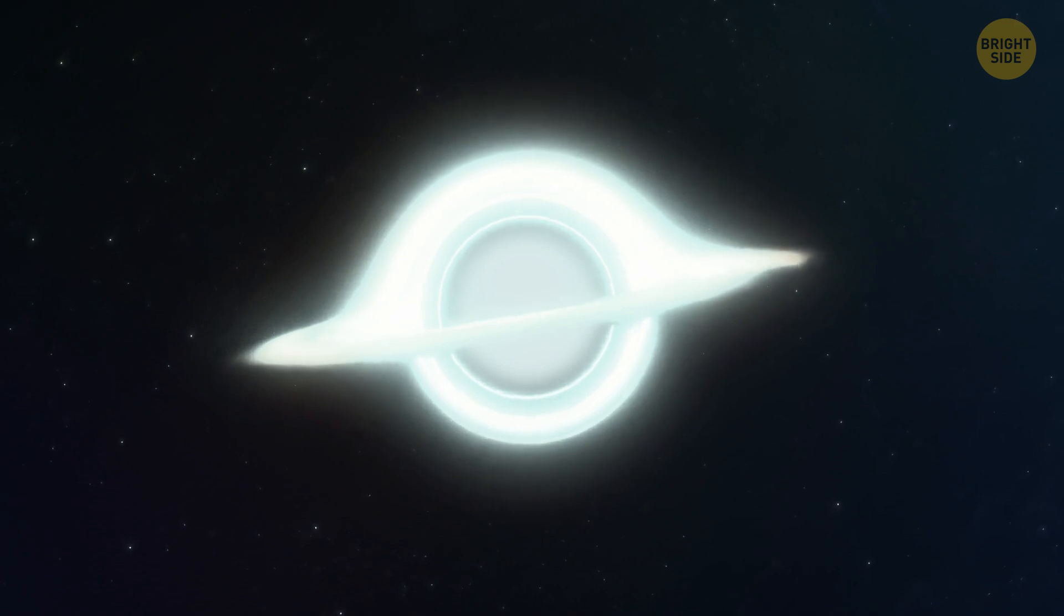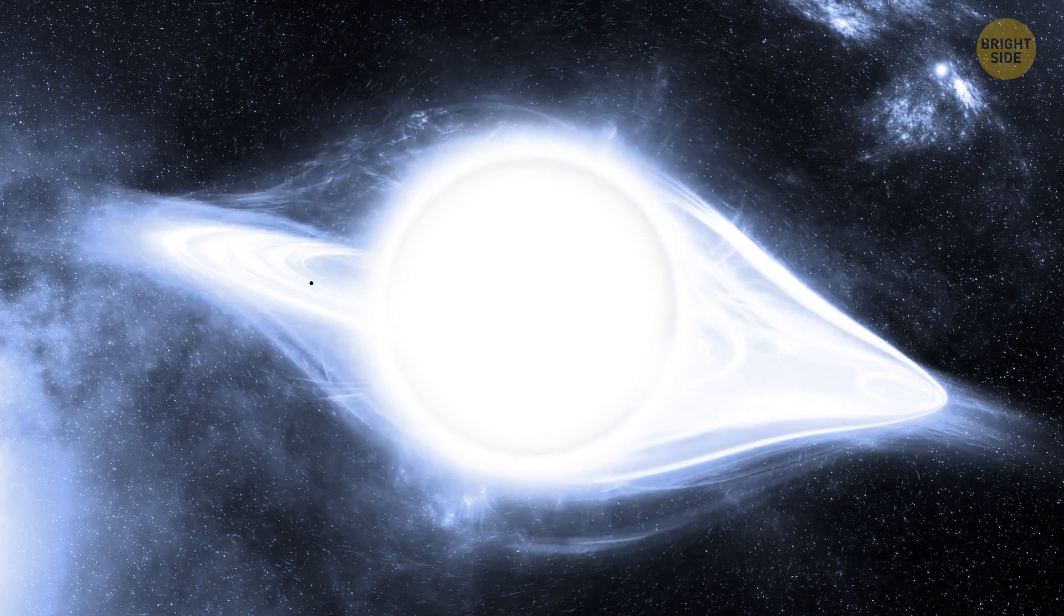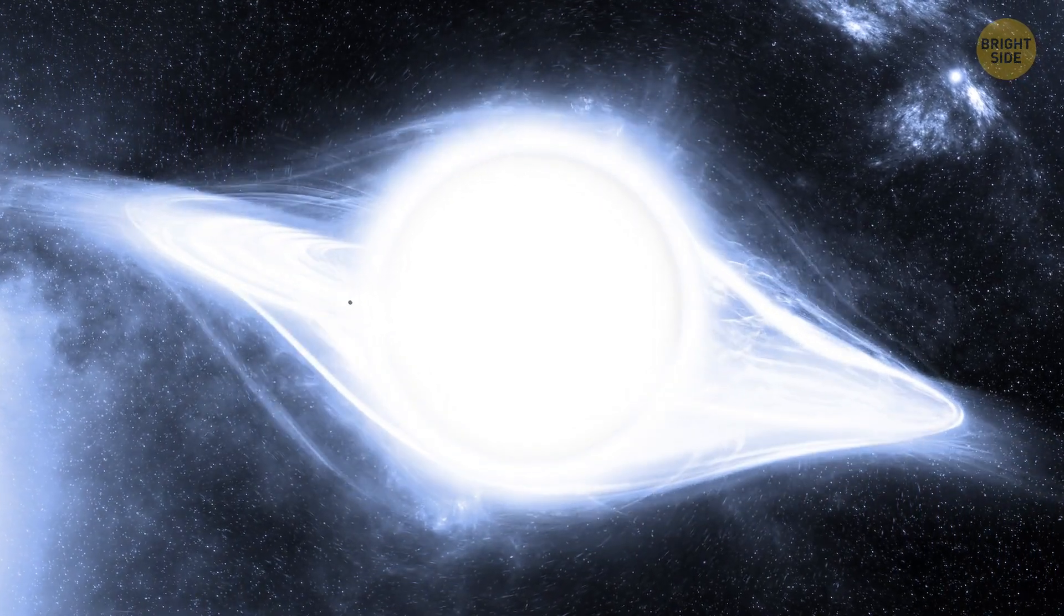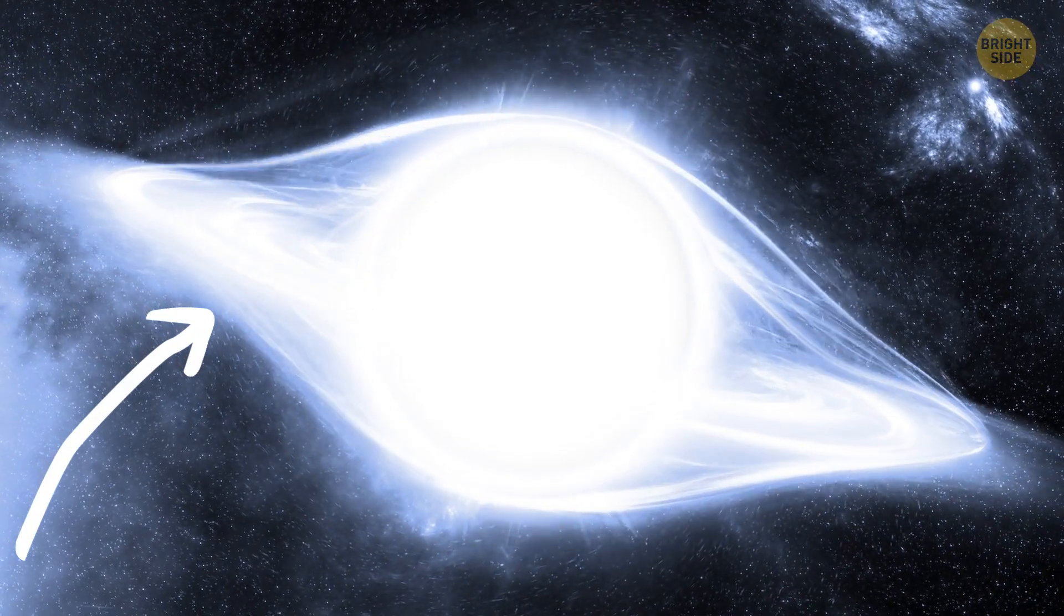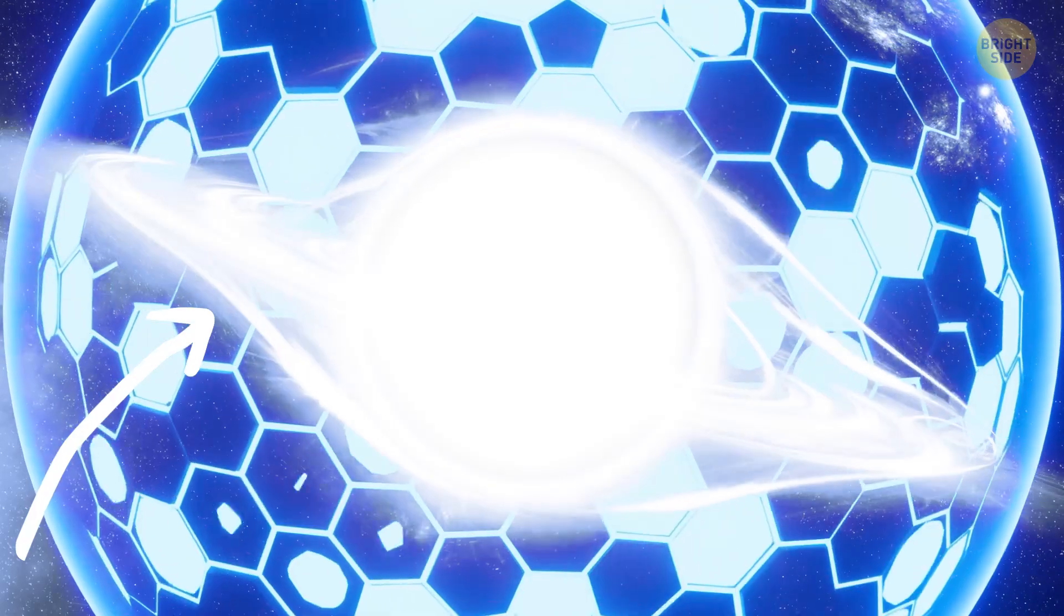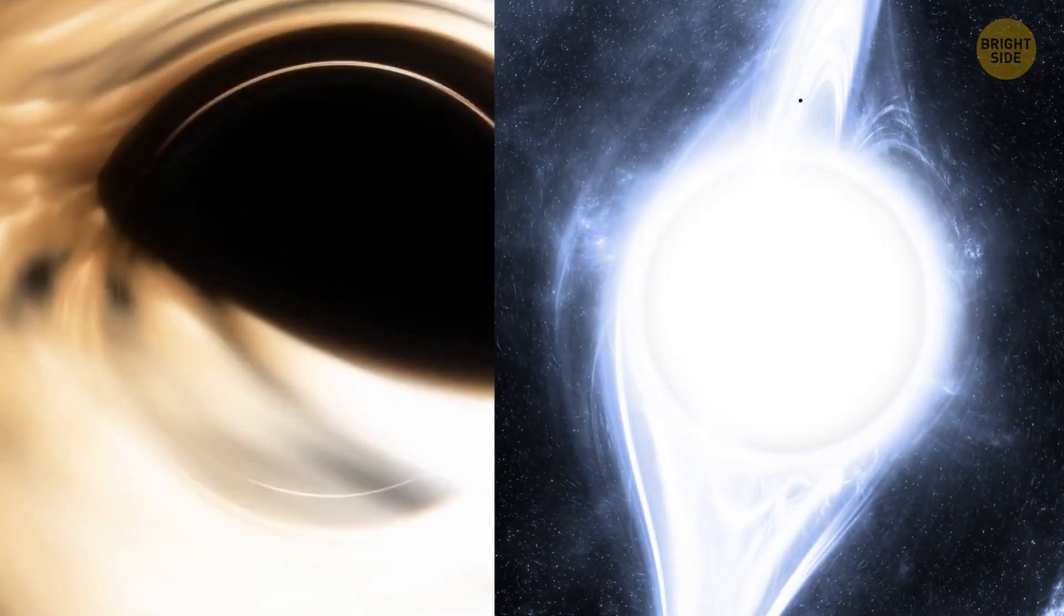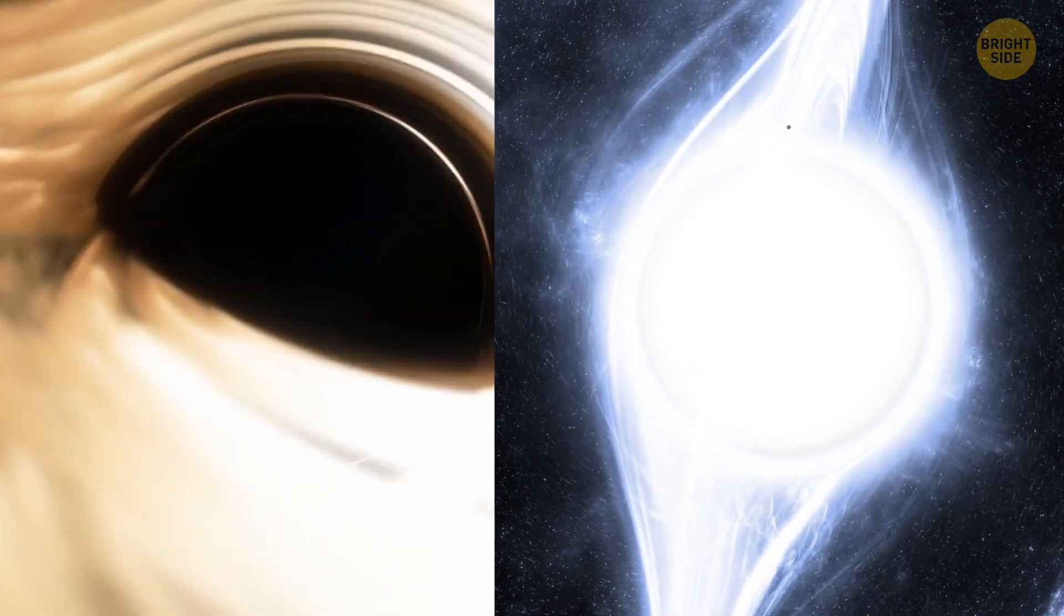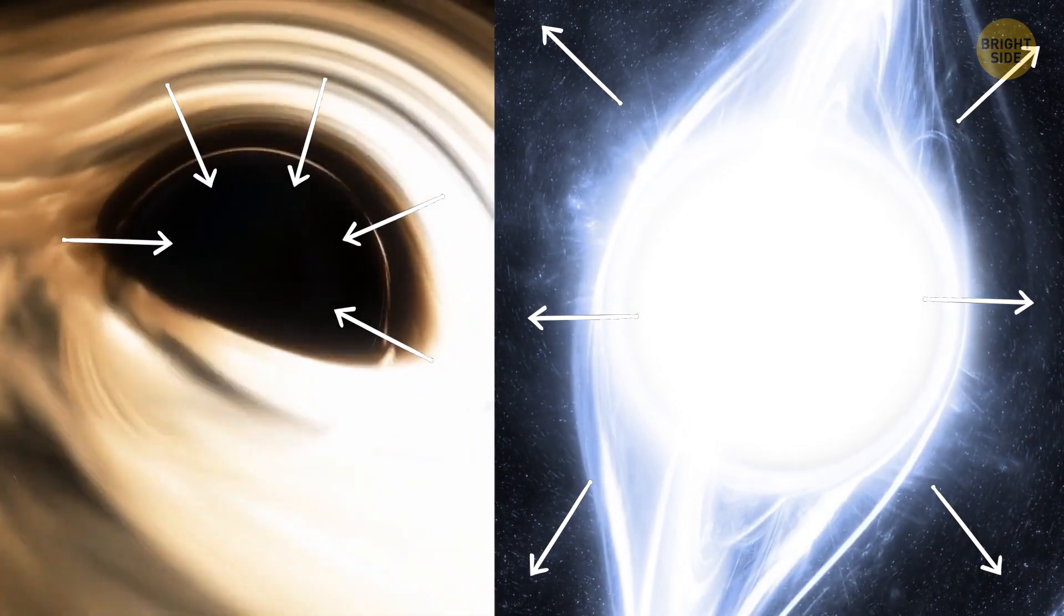You can see that white hole also has a mass and even spin. There might be a ring of dust and gas around its outer edge, known as the event horizon, which acts as a border separating the white hole from the rest of the universe. While they share similarities, there's one crucial difference. A white hole can release matter and energy, while a black hole cannot.